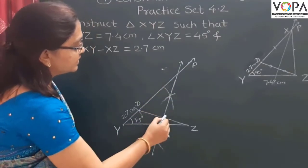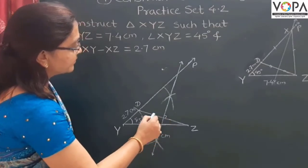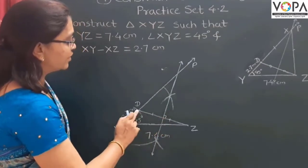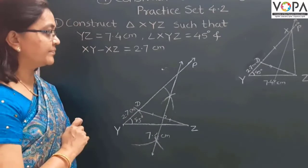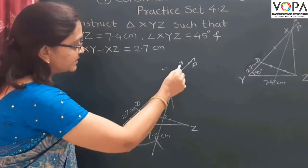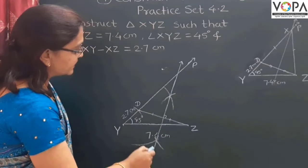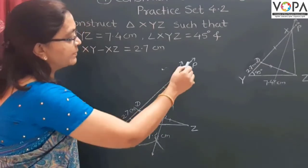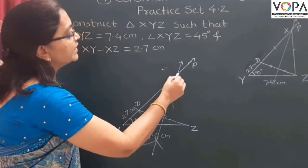Now, this is the perpendicular bisector of segment DZ. And this is the point of intersection of this perpendicular bisector and ray YP. This point is X.